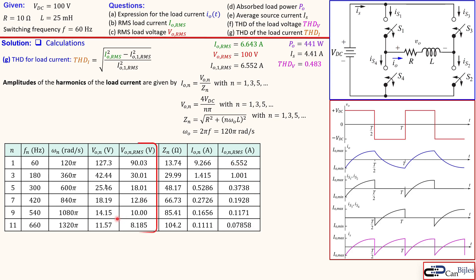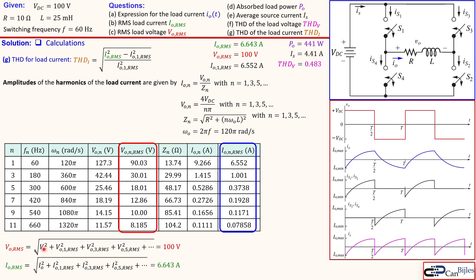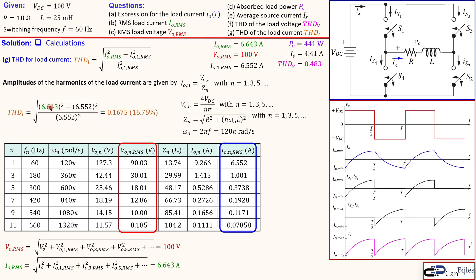Taking the load voltage and load current harmonic values and applying the RMS formulas, the results converge to 100 V and the known RMS load current as N approaches infinity. Substituting into the THD expression for load current gives approximately 0.1675, or 16.75%.